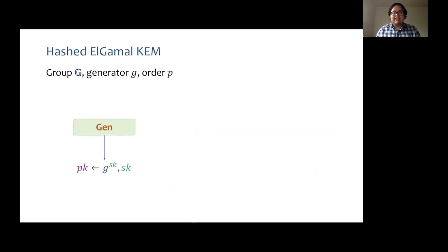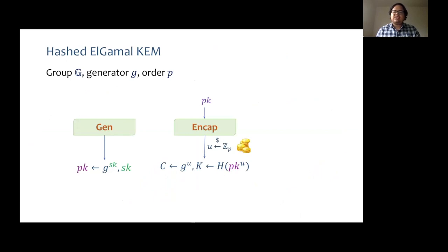We shall now introduce the hashed Elgamal scheme. Consider a group G of order P with generator G. The generation algorithm returns a public key-secret key pair such that the secret key is the discrete log of the public key with respect to the generator G. The encapsulation algorithm takes as input the public key, samples a random U from Z_P, and returns G^U as the ciphertext and the hash of the public key power U as the scheme key. The decapsulation algorithm takes as input the secret key and a ciphertext and returns the corresponding scheme key.